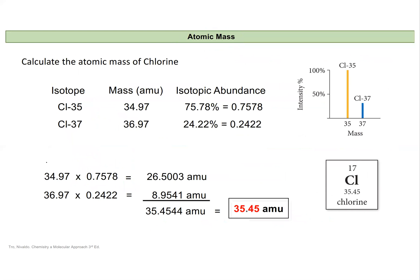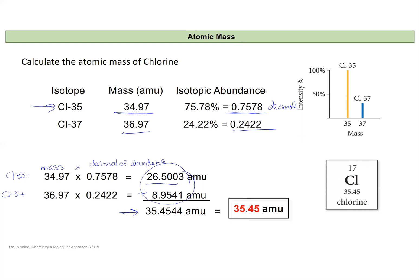For chlorine-35, we look up its mass in atomic mass units and its isotopic abundance — it occurs about 75.78% of the time. We convert this percentage to a decimal and multiply it by the mass of chlorine-35, getting approximately 26.5. For chlorine-37, doing the same with its mass and isotopic abundance gives approximately 8.9. Adding these two together gives 35.45 atomic mass units, which is the atomic mass of chlorine as seen on the periodic table.